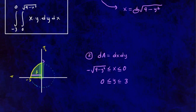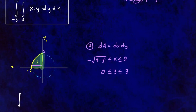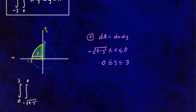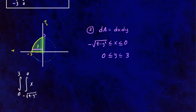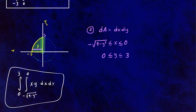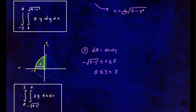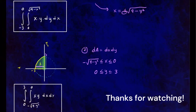So this integral, which we set up as dy dx, is also equivalent to the double integral from y = 0 to 3, and x from −√(9 − y²) to 0, of x·y dx dy. Both of these are equivalent expressions in rectangular coordinates. I'm not going to proceed with the integration — I just set them up for you, so hopefully you can finish the problem.